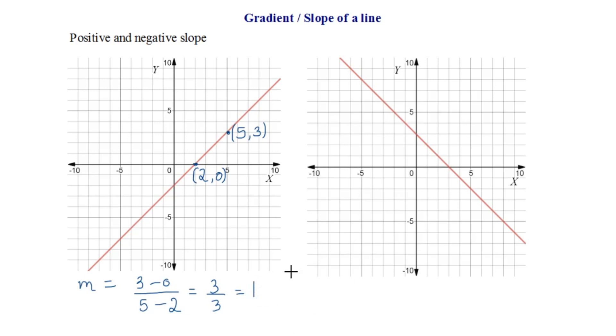Similarly let's find the gradient of the next graph. Here let's take this point on the y-axis as (0,3) and the second point as (3,0). Gradient m will be equal to y2-y1, 3-0 upon x2-x1, 0-3. This becomes 3 by -3 which is equal to -1.